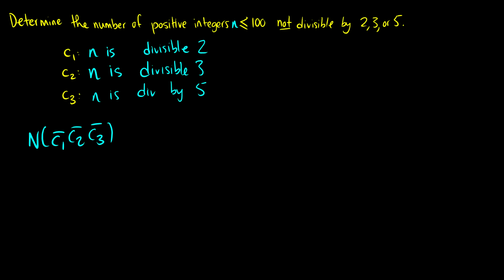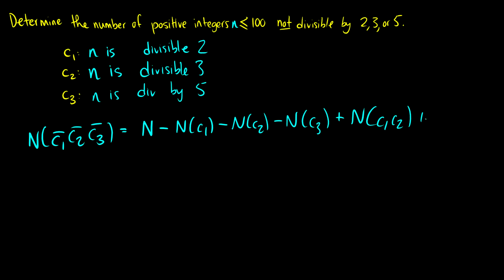So n(C1 bar, C2 bar, C3 bar) equals n minus n(C1) minus n(C2) minus n(C3), then we add back n(C1,C2), n(C1,C3), and n(C2,C3) — because some items are being counted negative times in overlapping sections — and finally we subtract n(C1, C2, C3) since the very center element is now counted once too many.